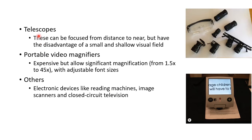The next type of low vision aids is telescopes. These can be focused from distance to near but have the disadvantage of a small and shallow visual field. This picture shows telescopes which are used as low vision aids.